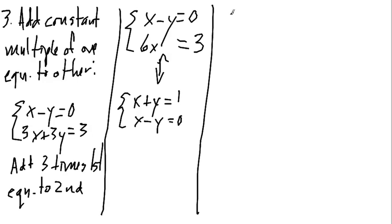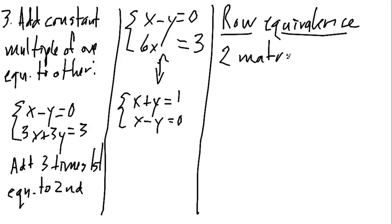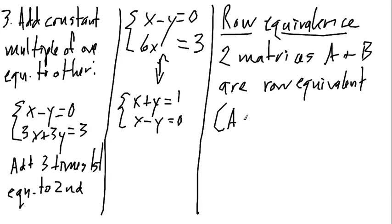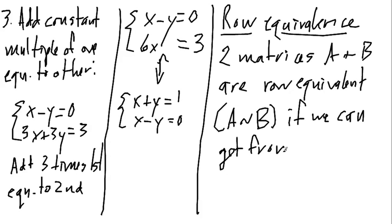Well, we have similar notions for matrices. We have something called row equivalents. And we say that two matrices A and B are row equivalent, and we denote it by A tilde B if we can get from one to the other via the following so-called row operations.